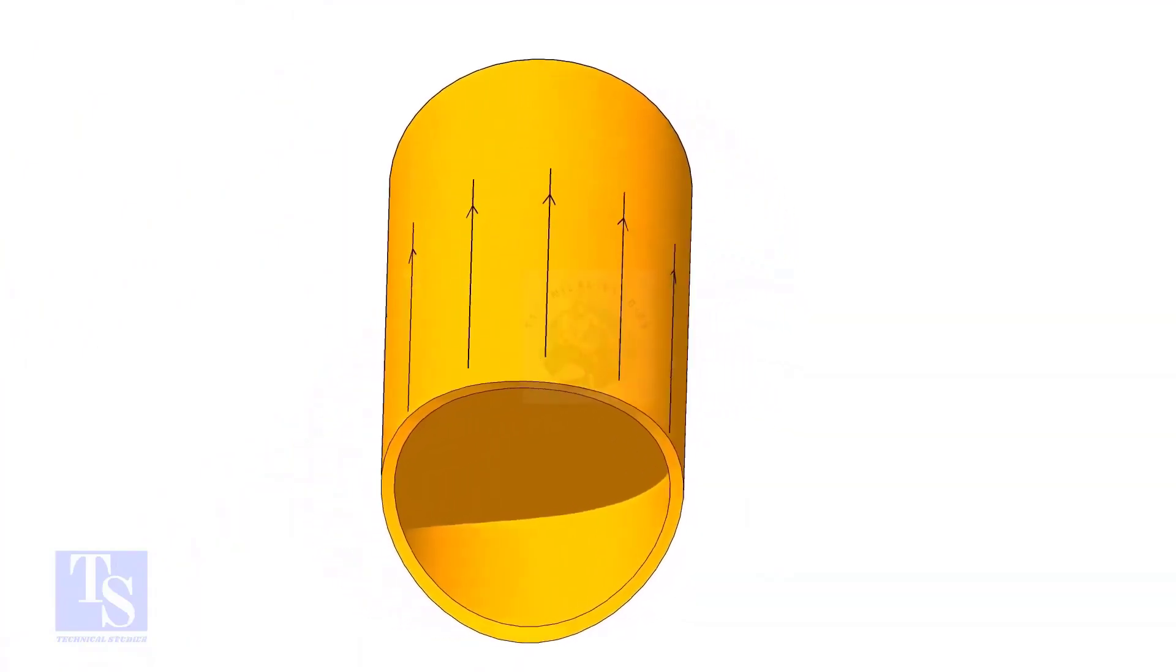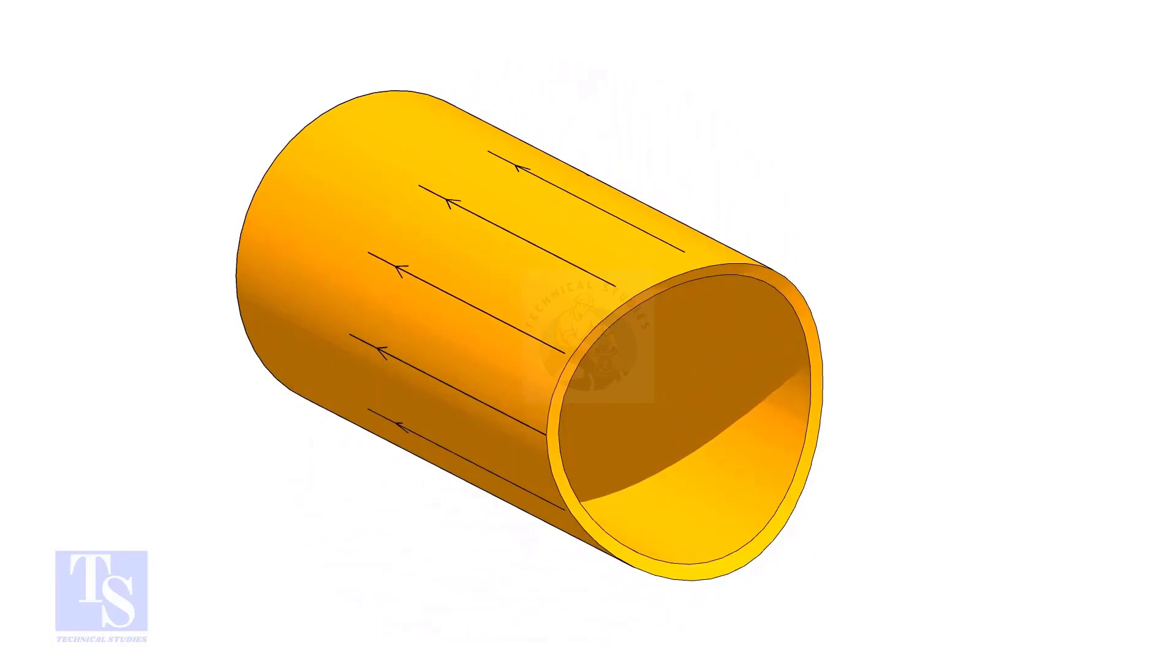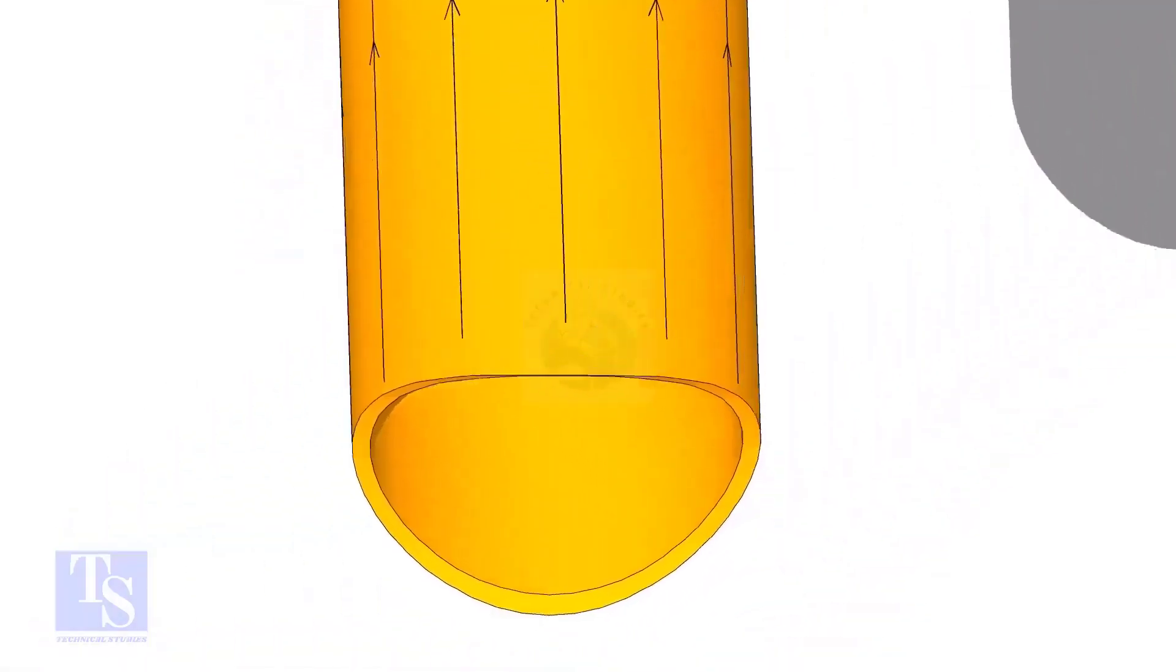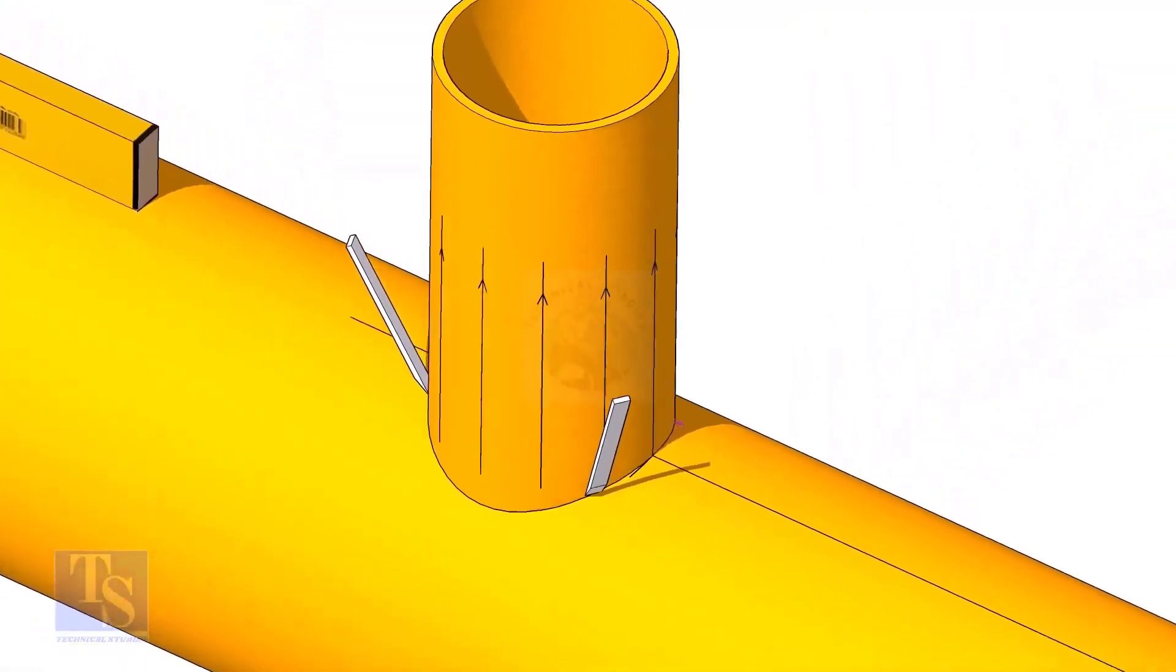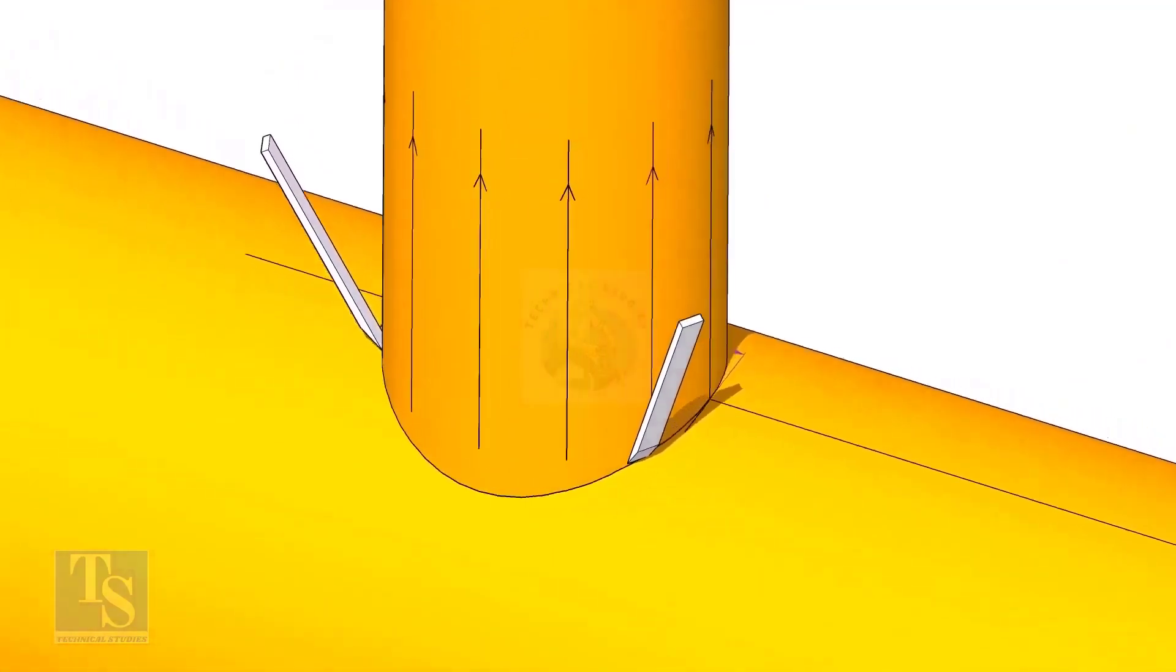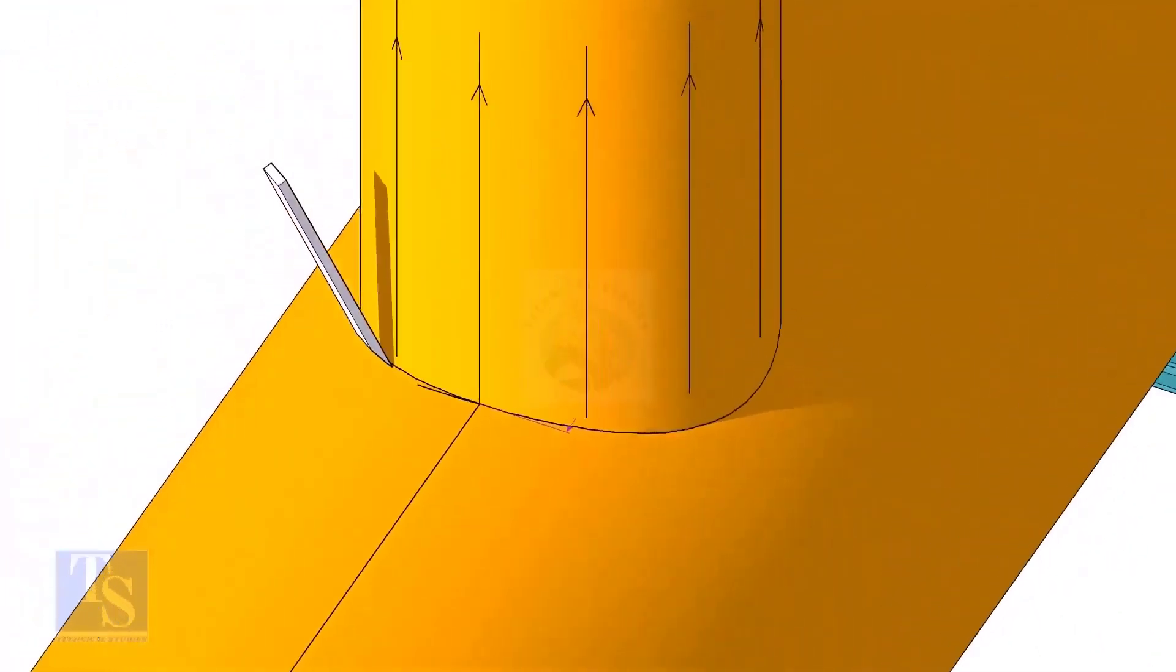After cutting and grinding the notch on the branch pipe, put it on the header. Make sure it is exactly in its position, and mark the opening on the header as shown.